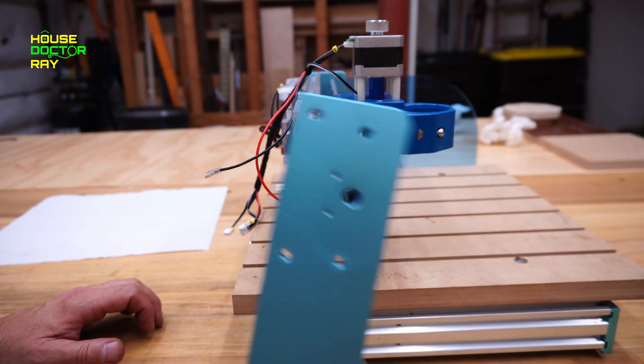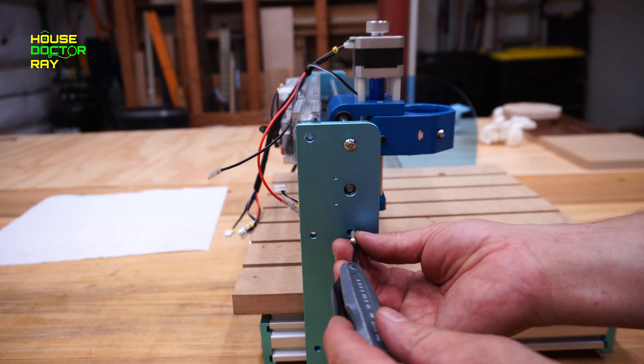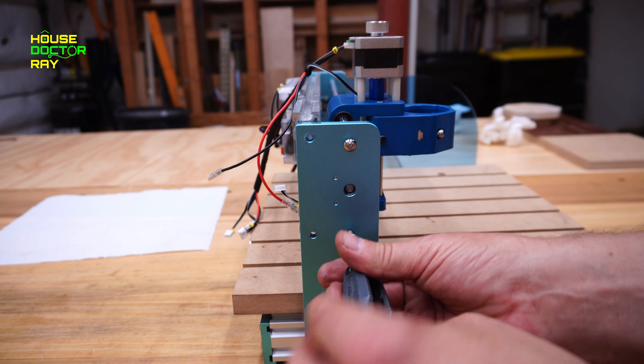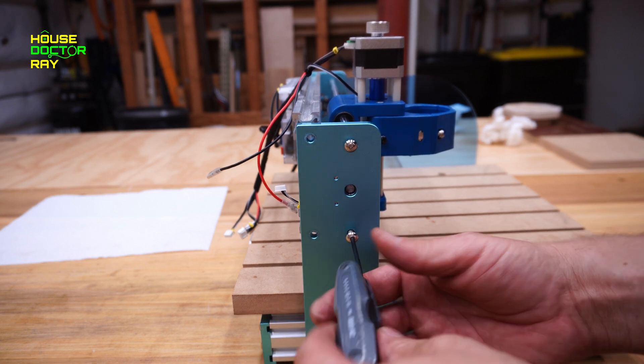Let's put your side piece back on. Should be good to go. And whenever you're putting something like this back together, it's always a good idea to get all of your screws started before you tighten any of them up. That way you won't have any alignment issues later.